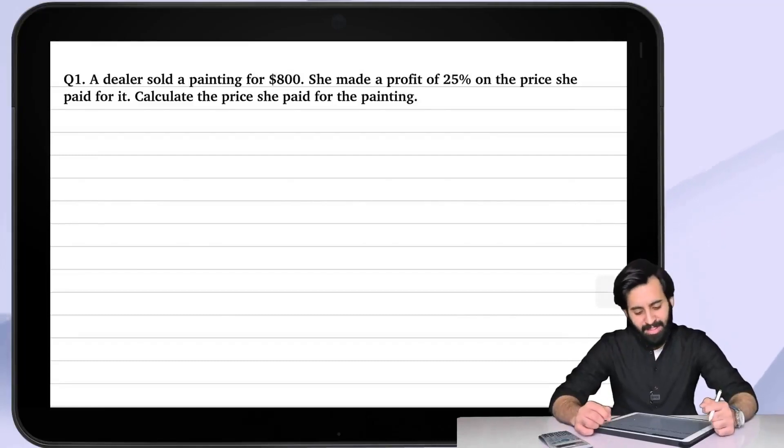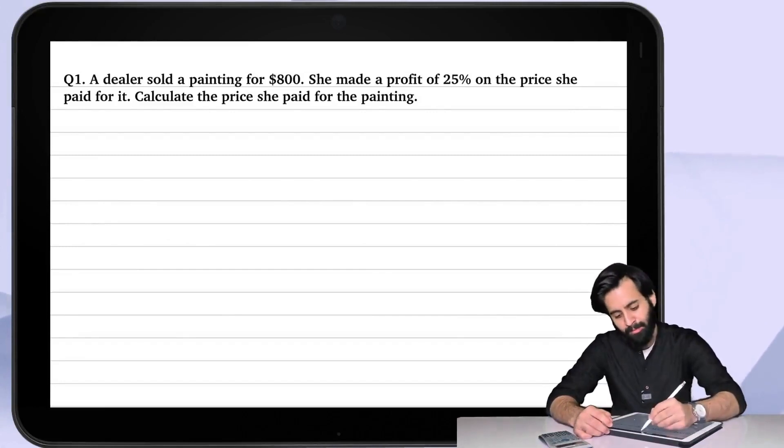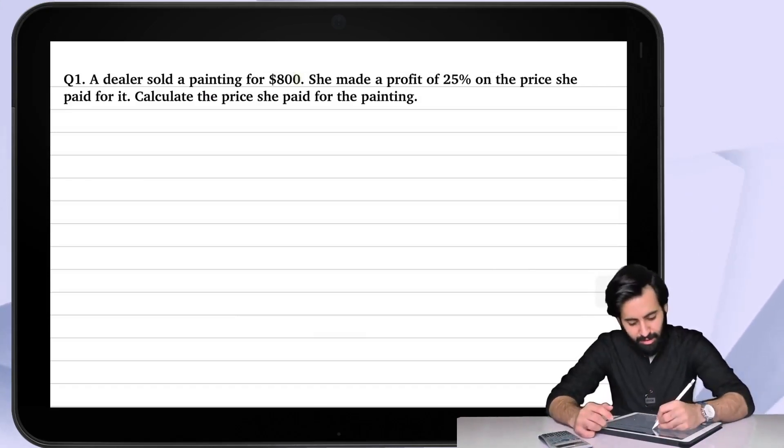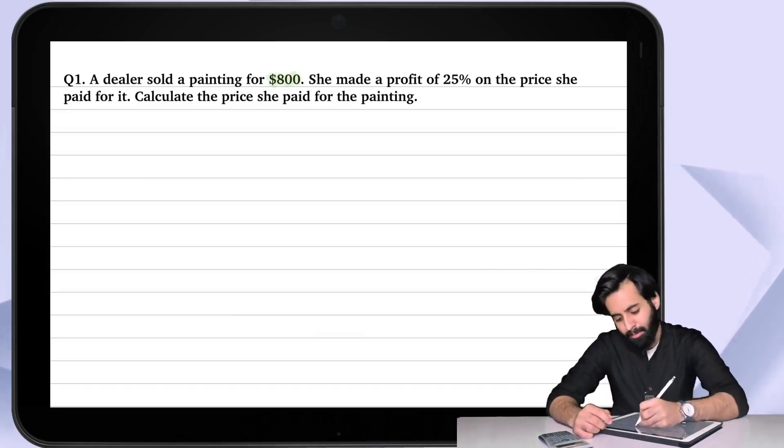In this video we're going to solve some questions related to the topic profit and loss. Here we have question number one. As I read along the question I'm going to highlight the important values and important words. A dealer sold a painting for $800 dollars.